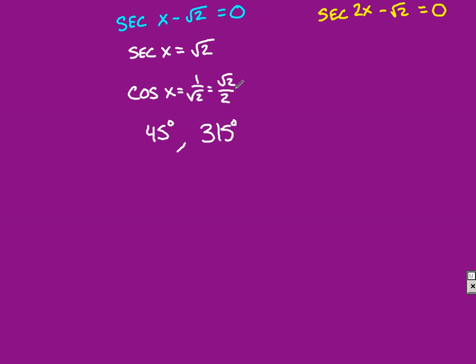In quadrant 1, it's root 2 over 2, which means the cosine value is 45 degrees in quadrant 1, and quadrant 4 would be 315 degrees.